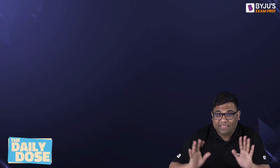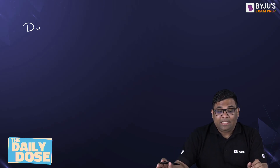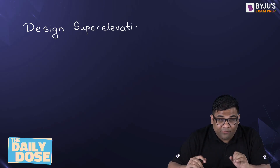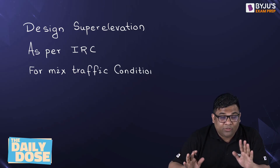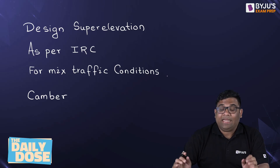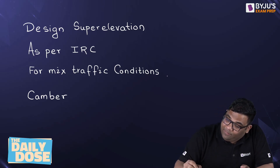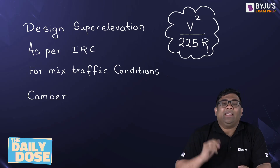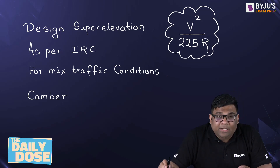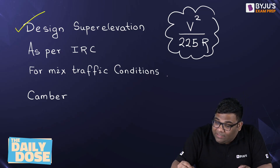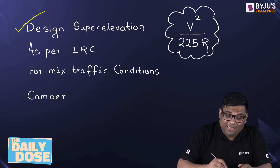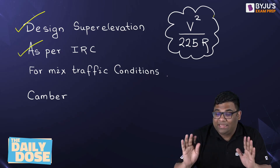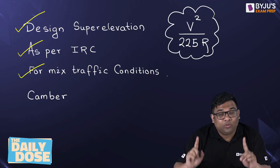If you see terms like 'design super elevation', 'as per IRC', 'as per mixed traffic conditions', or if there is a question related to camber, then in these cases you are going to use V square by 225R. If they give you design speed and radius of the curve and ask you to find the design super elevation directly, use this formula, because this formula is based on 75% of the design speed. If they write 'as per IRC' or relevant code, also use this formula. For mixed traffic conditions, use this formula as well.